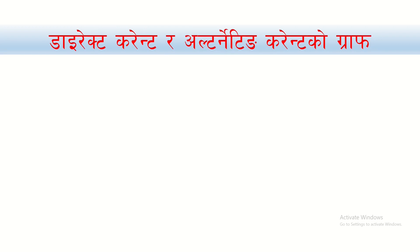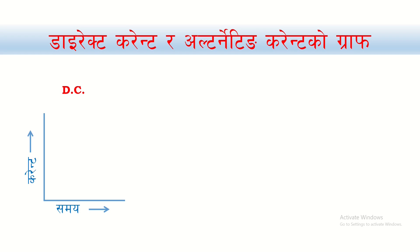The alternating current will be represented by a graph. This is the direct current DC on a graph — the x-axis is time and the y-axis is the current. This is the graphical representation of the direct current. This current is 1 ampere — a constant straight line.